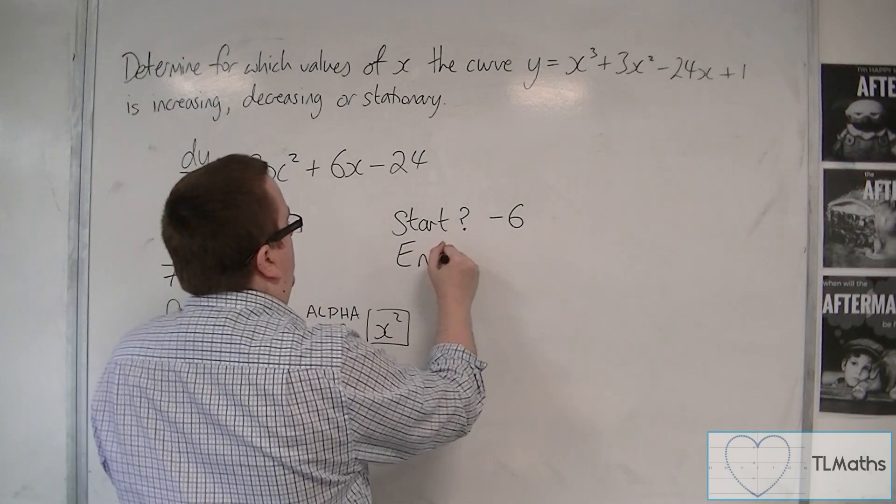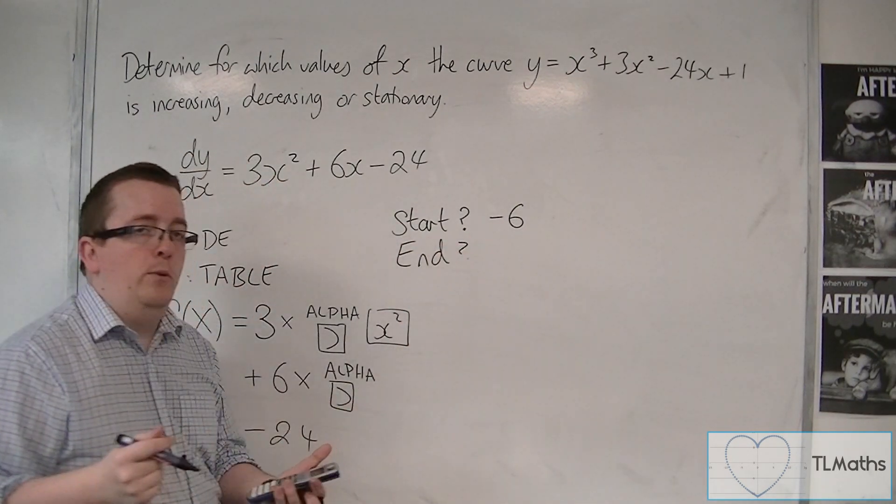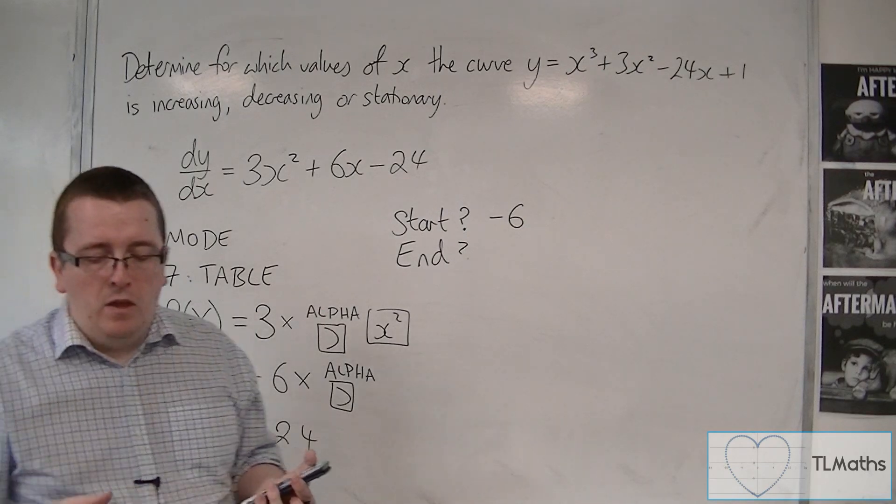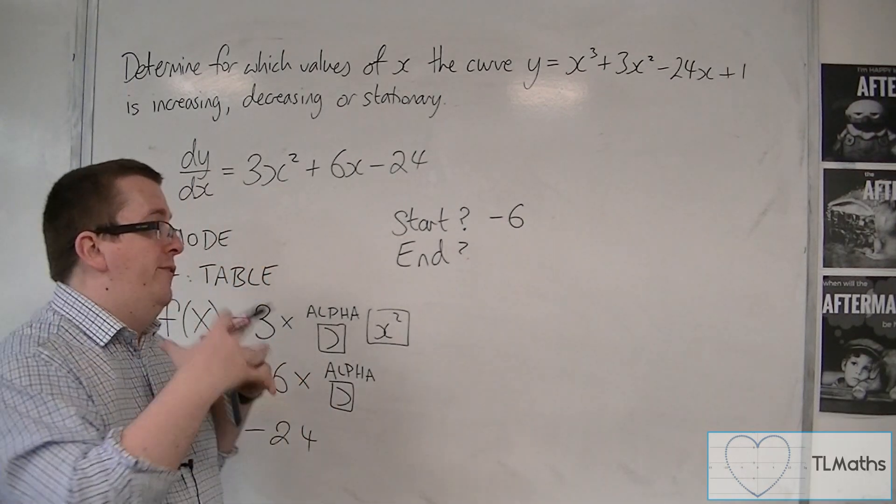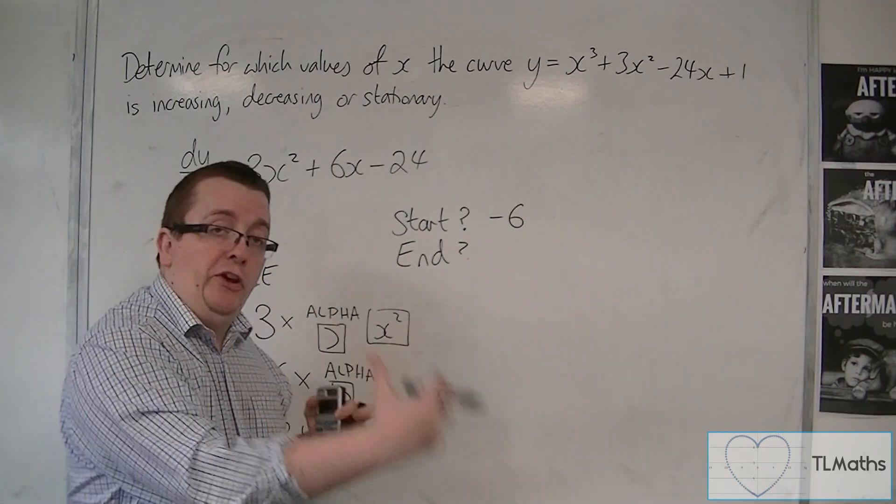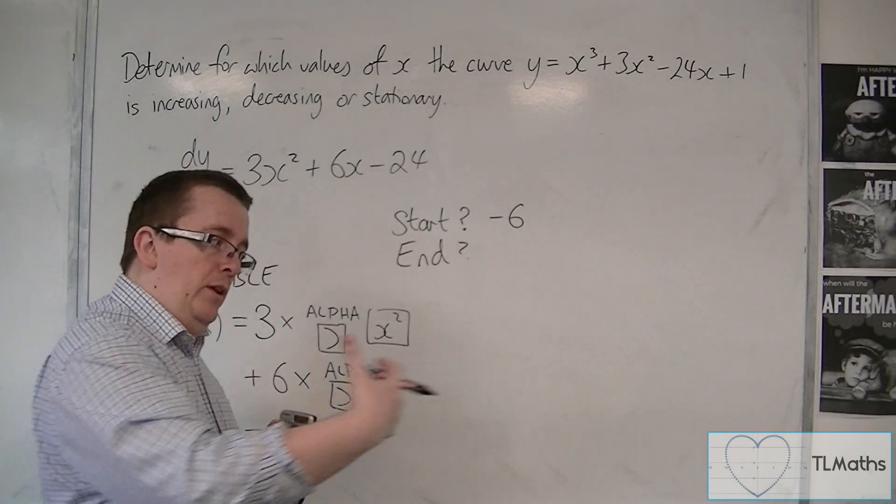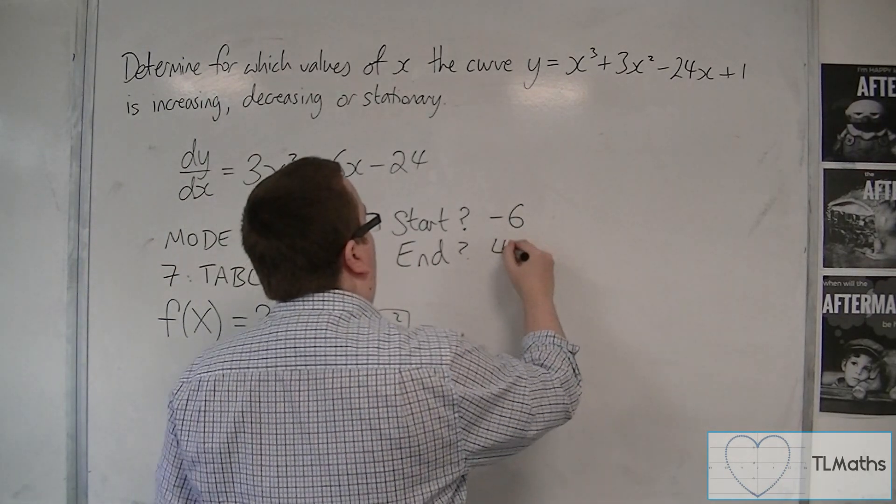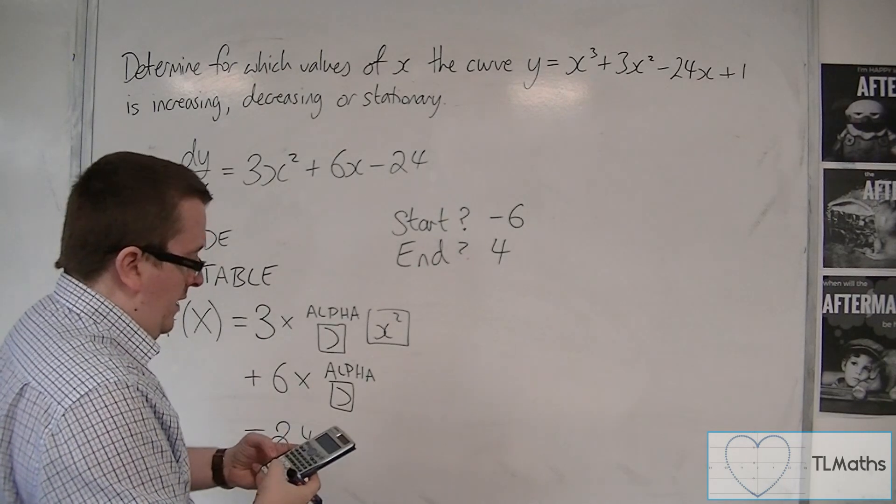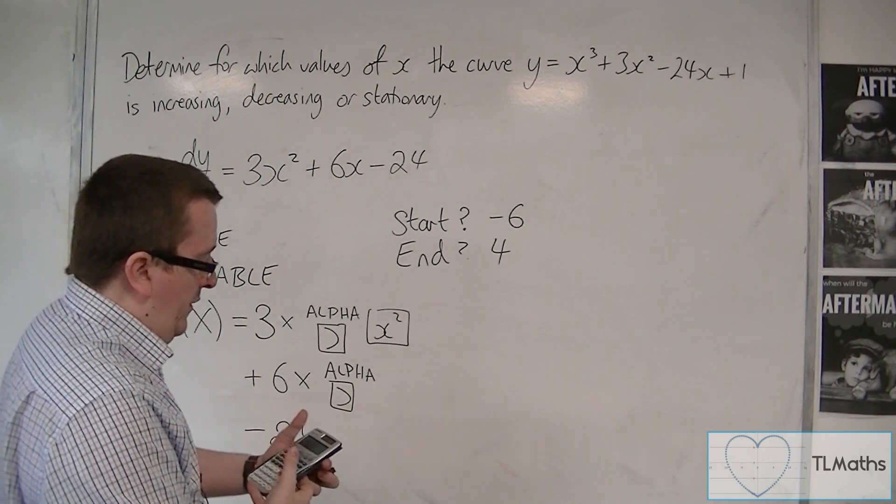And what you'll have then is something now asking you, how about the end value? Well, when we found the stationary points, the second one was 2. So we're going to do a couple of points ahead of that. So let's try 4. Press equals.